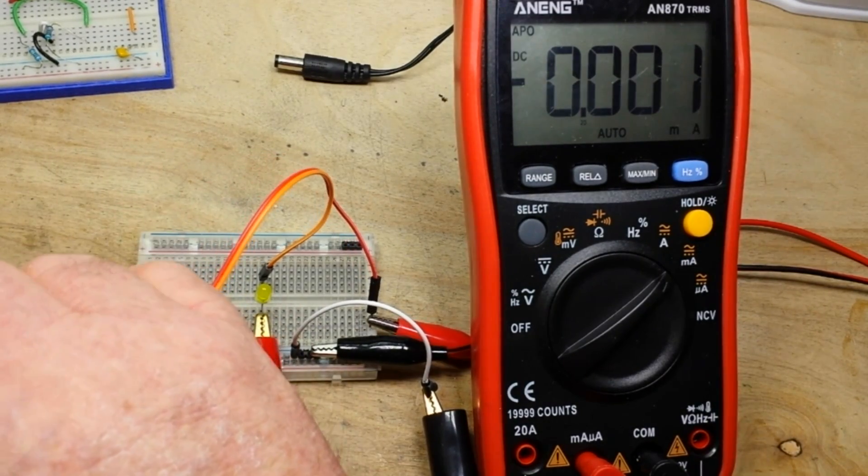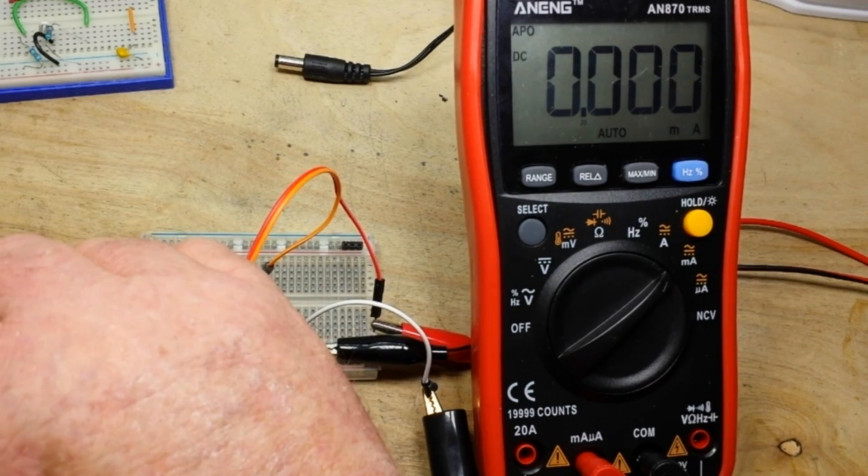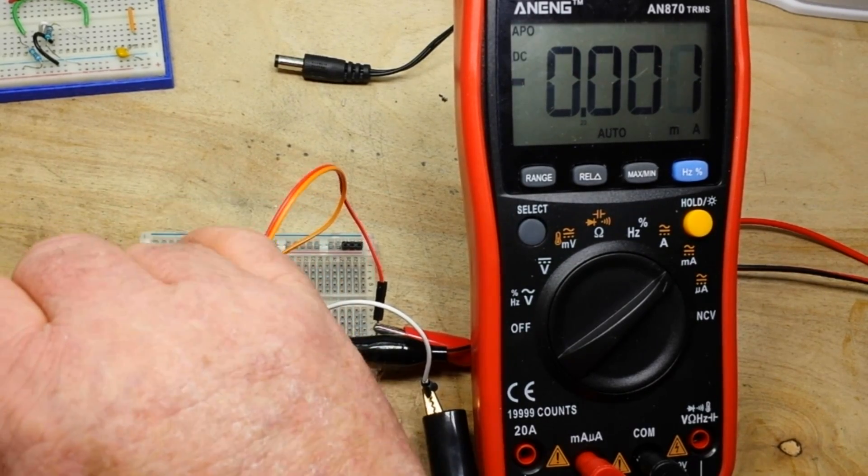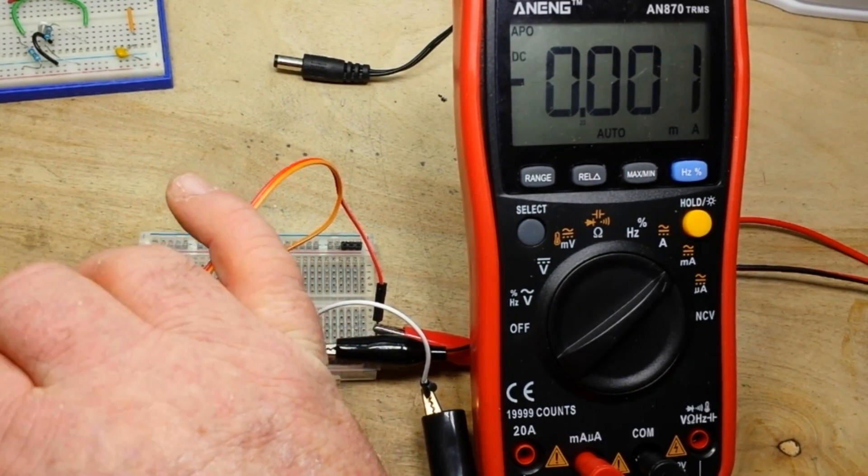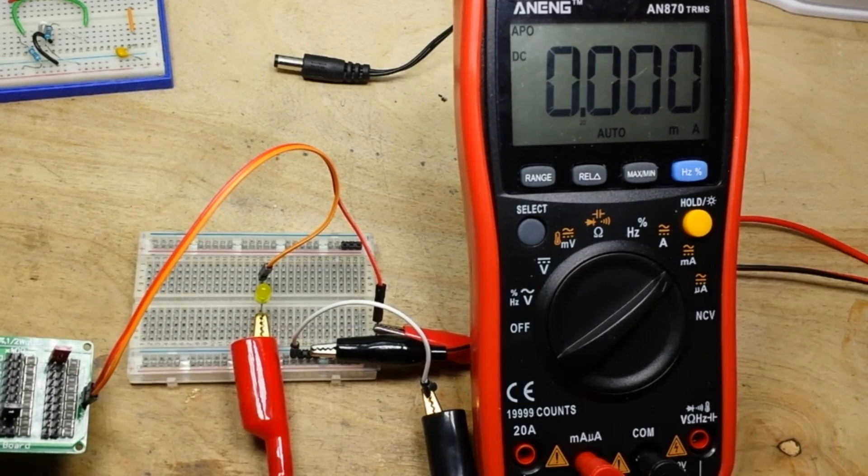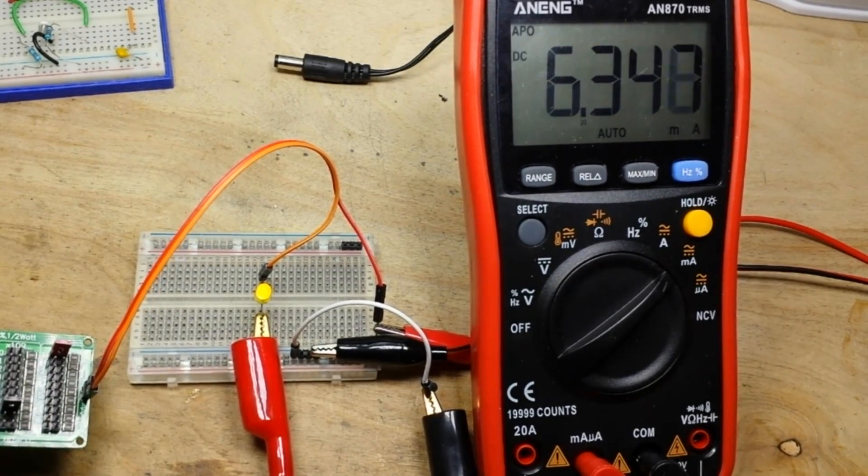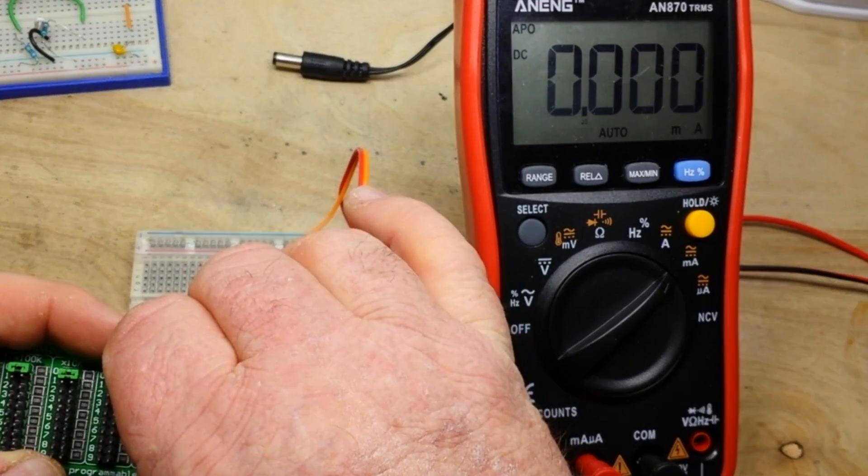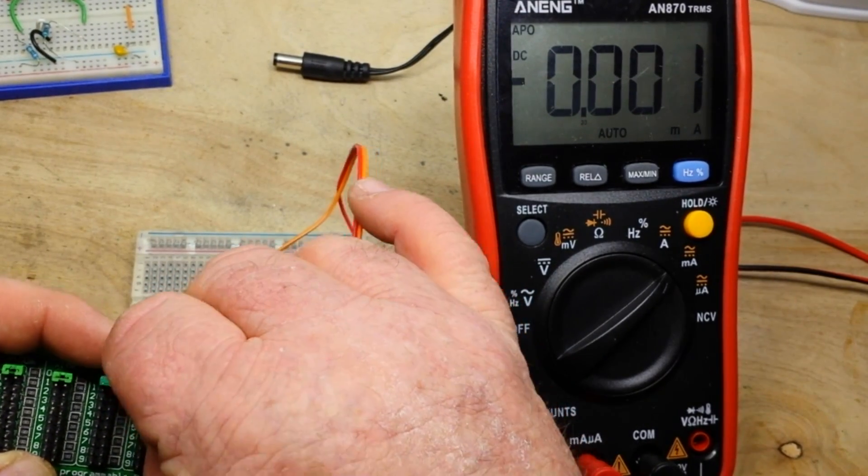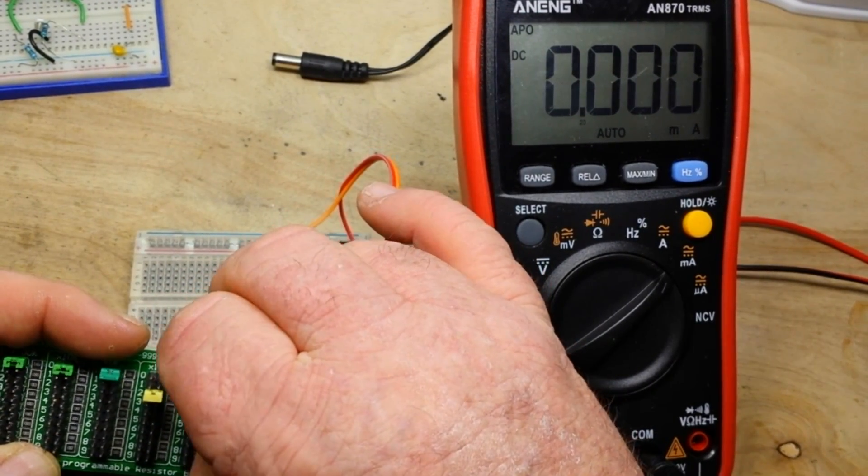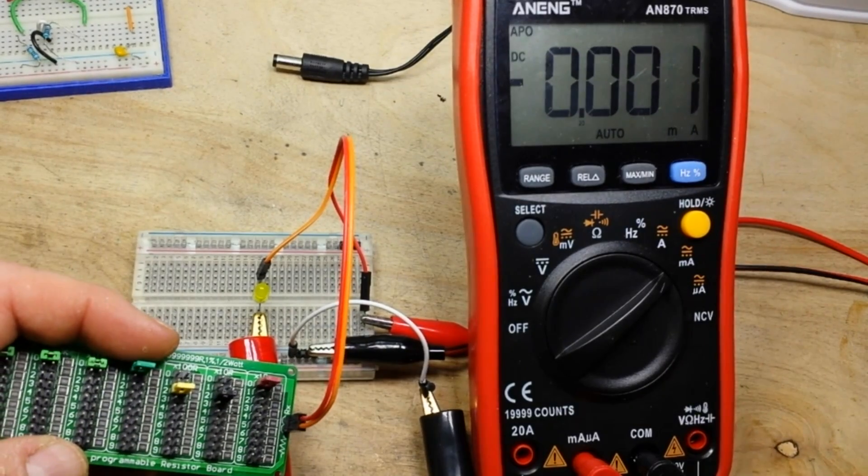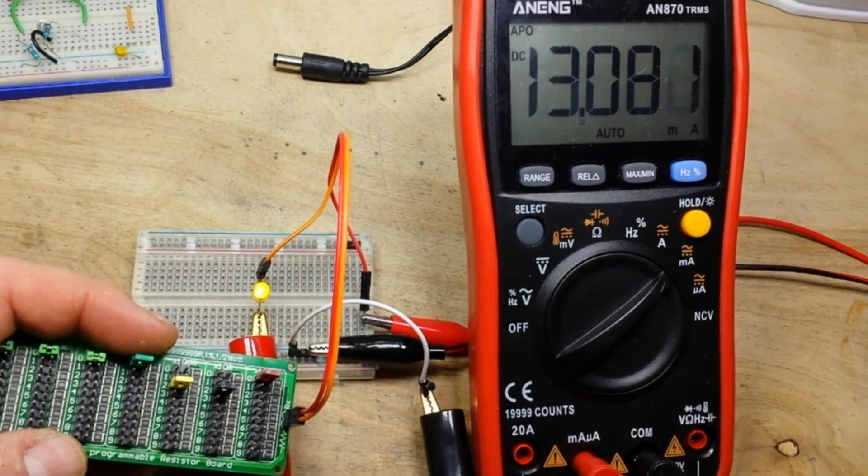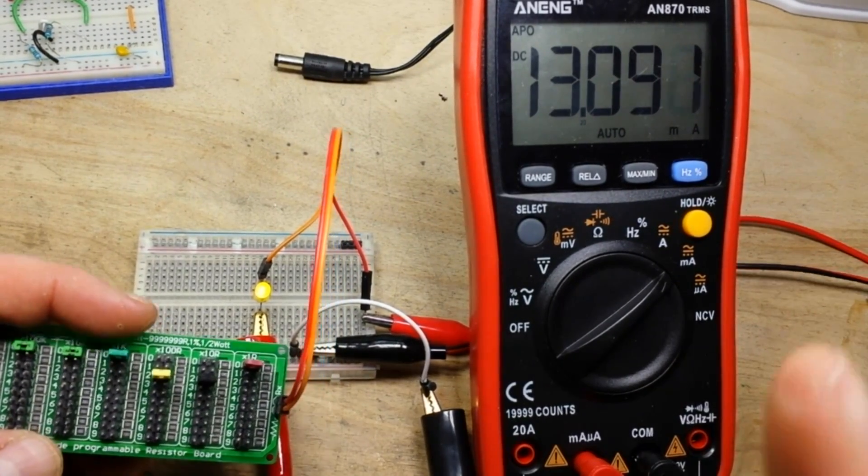And the LED is clearly lit, and we're only pulling 3 milliamps. Cut it in half. We'll say 470. 6.3 milliamps. In this case, let's go 220. That's 13 milliamps. I would leave it right there.